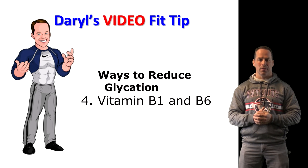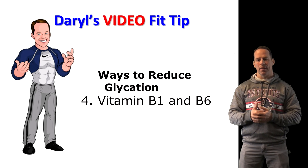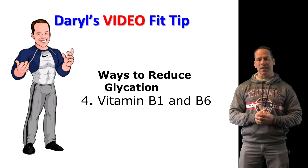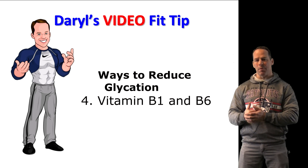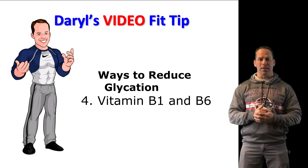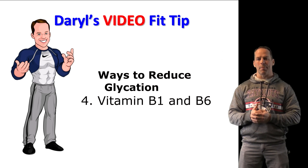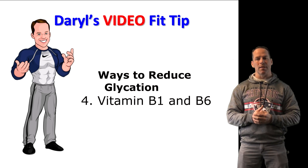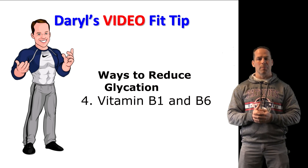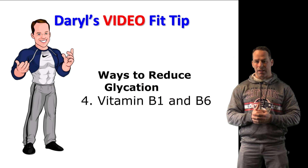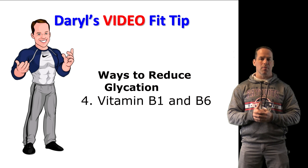Four: get your B's. Vitamin B1, thiamine, and vitamin B6 act as potent inhibitors of advanced glycation end products. Aim for one milligram per day of each. Good sources of vitamin B1 include grass-fed beef and liver, nuts, and pasture-raised pork and eggs. Good sources of vitamin B6 include grass-fed beef, pasture-raised chicken, pork and turkey, as well as some wild fish.